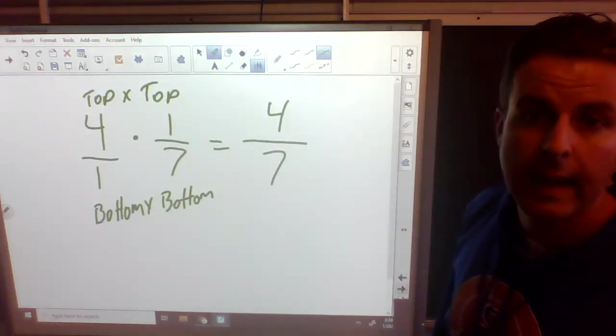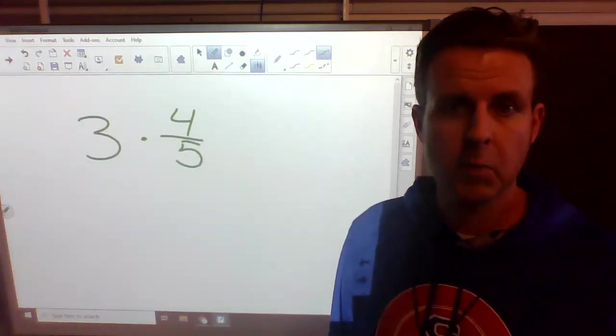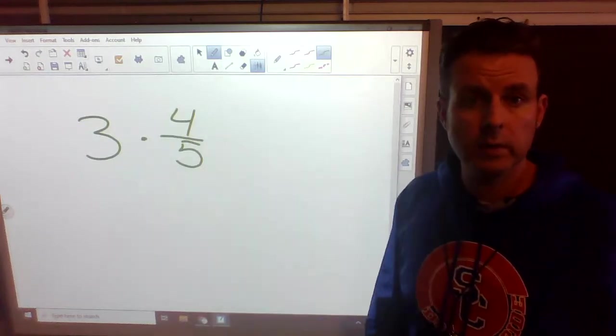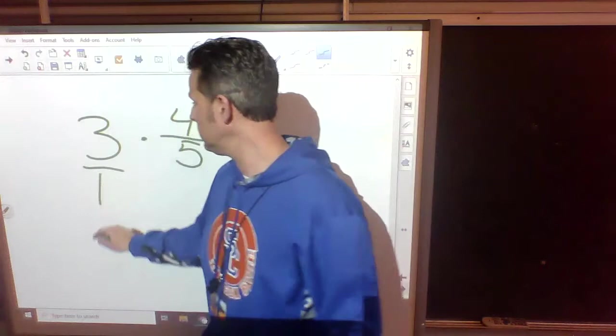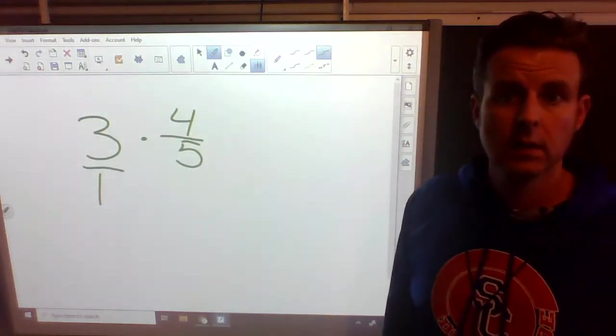Wait a minute, Mr. Drake. That was easy. I know. 3 times 4 fifths. We need two fractions. How do we turn a whole number into a fraction? We put it over 1. So we change this. 3 over 1. It's still 3, but now it's a fraction.